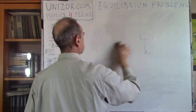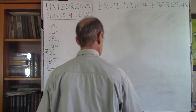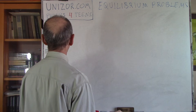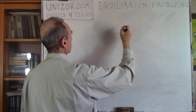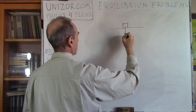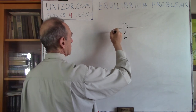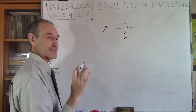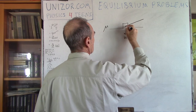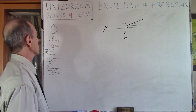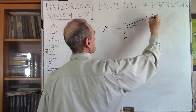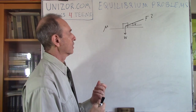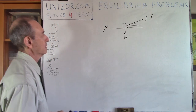Let's go to the next one. The next problem is the following: we have a horizontal surface and an object of weight W. The coefficient of static friction is mu — static is very important here. We have a rope which makes an angle phi with the horizon. The question is: what is the minimum force F required to start moving the object?